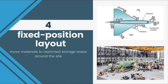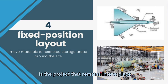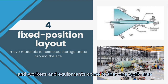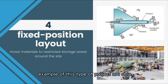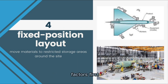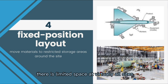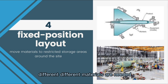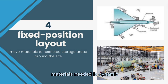The fourth one is fixed position layout. Fixed position layout is a project that remains in one place, and workers and equipment come to that one work area. Examples of this type include ships, highways, and also aircraft. The techniques for addressing fixed position layout are complicated by three factors: first, there is limited space at virtually all sites; second, at different stages of a project, different materials are needed; and third, the volume of materials needed is dynamic.